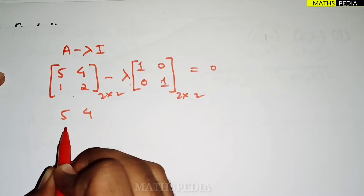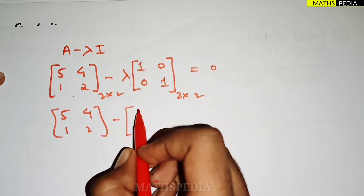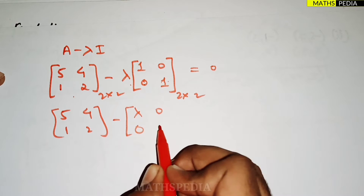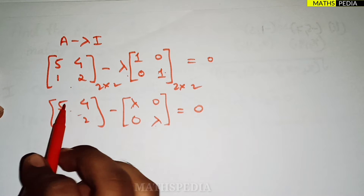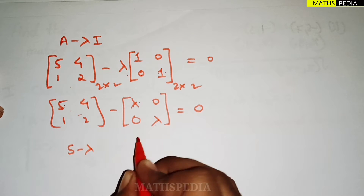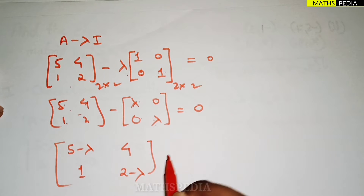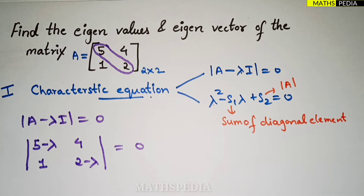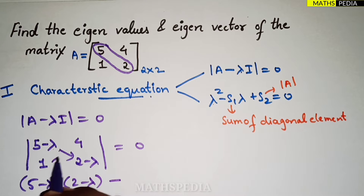This comes from computing A minus λI: A is [5, 4; 1, 2] and λI is [λ, 0; 0, λ]. Subtracting gives [5−λ, 4; 1, 2−λ]. Now computing the determinant: (5−λ)(2−λ) minus 1×4, set equal to zero.